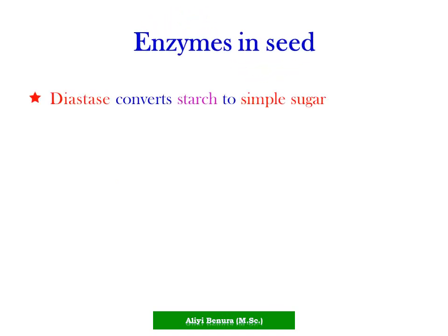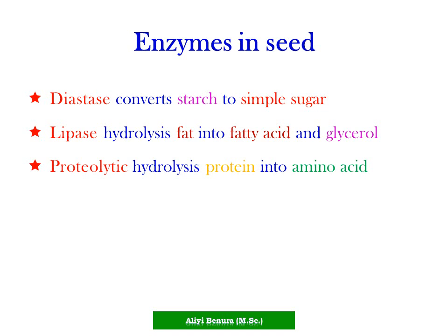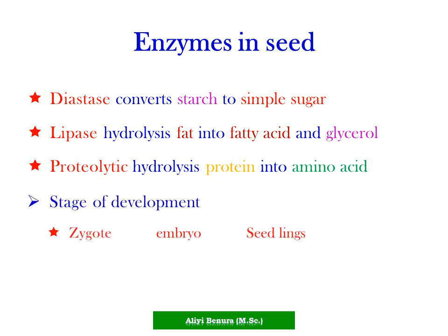Enzymes in seeds convert starch to simple sugar, where lipids hydrolyze into fatty acids and glycerol, and proteolytic enzymes hydrolyze protein into amino acids. The stages of development of plants: zygote grows into embryo, embryo grows into seedlings, and seedlings again go to germination.